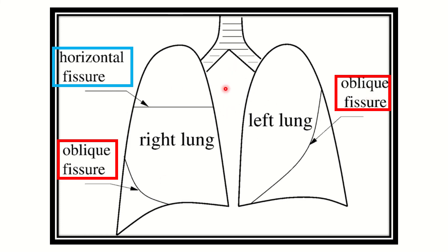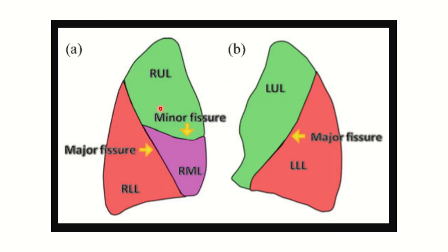In this second picture, we can also see the right lung. Here we have the right upper lobe, right middle lobe, and right lower lobe. In the case of the left lung, it has the left upper lobe and left lower lobe. On the right side: right lower lobe, right middle lobe, and right upper lobe.